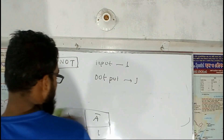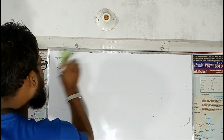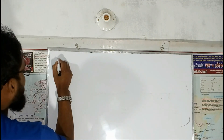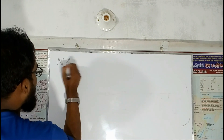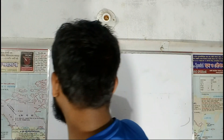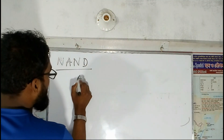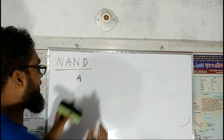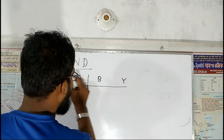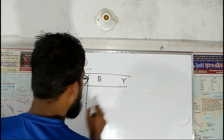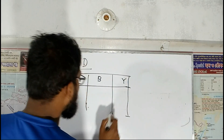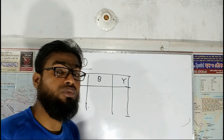After NOT gate, we will talk about the NAND gate. The NAND gate is like the AND gate in theory, but its output is the complement of the AND gate output. Let us now look at the NAND gate and understand its key properties.